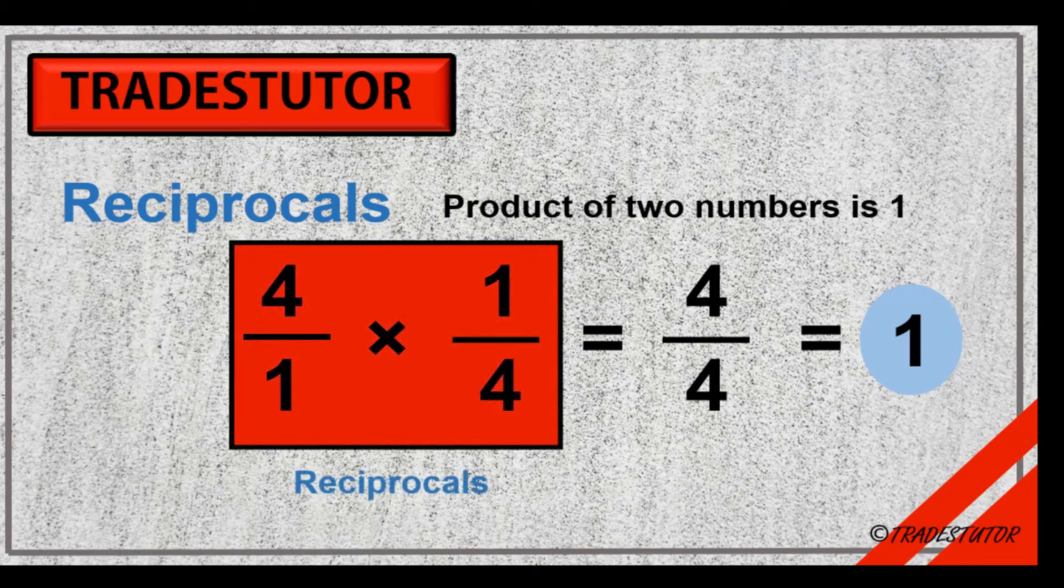Now, why this is important? Because if we want to get a variable out of one side, we can do that by multiplying by its reciprocal to end up with one, and then effectively we remove it from one side.